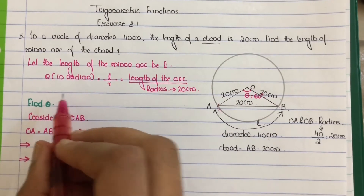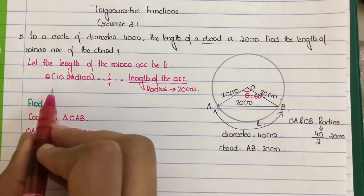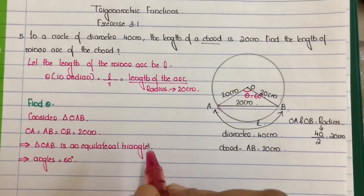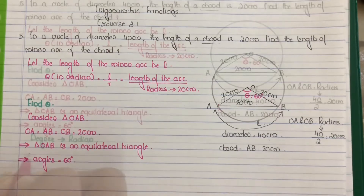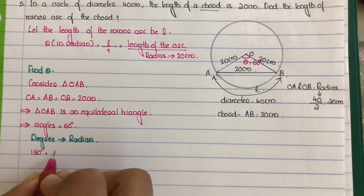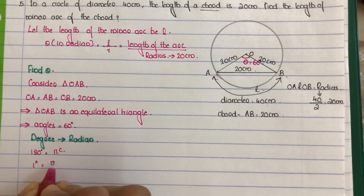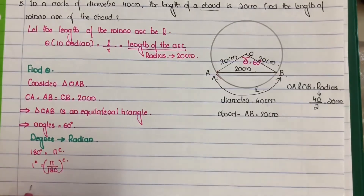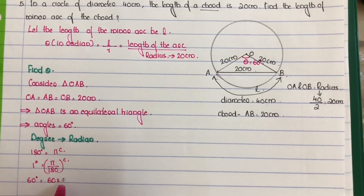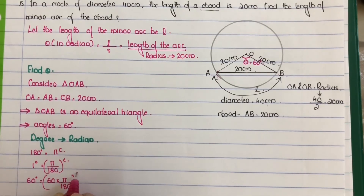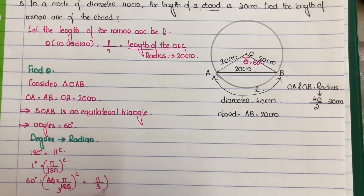Can we directly substitute theta equals 60 degrees into the equation? No, because the equation requires theta in radians, not degrees. So we convert: 180 degrees equals pi radians, therefore 1 degree equals pi by 180 radians. So 60 degrees equals 60 times pi by 180, which equals pi by 3 radians.